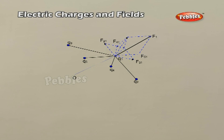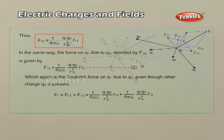To better understand the concept, consider a system of three charges Q1, Q2, and Q3. The force on Q1 due to Q2 and Q3 can be obtained by performing a vector addition of the forces due to each one of these charges. Thus, if the force on Q1 due to Q2 is denoted by F12, F12 is given by the equation shown above, even though other charges are present.